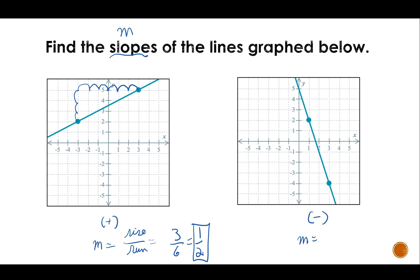You can also see here if I went up one over two, I'm at another point. Up one over two, at another point. So we can simplify our slopes.